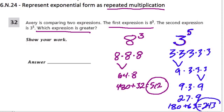So even though the exponent was larger, it wasn't large enough to be greater than 8 to the 3rd. So 8 to the 3rd is greater.